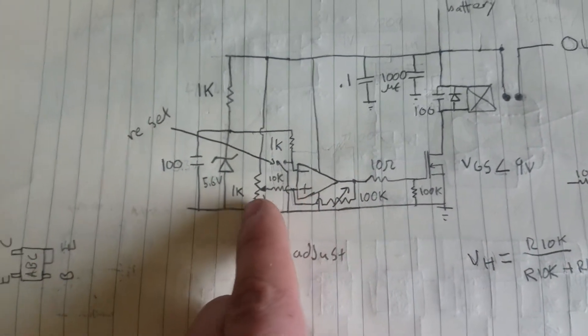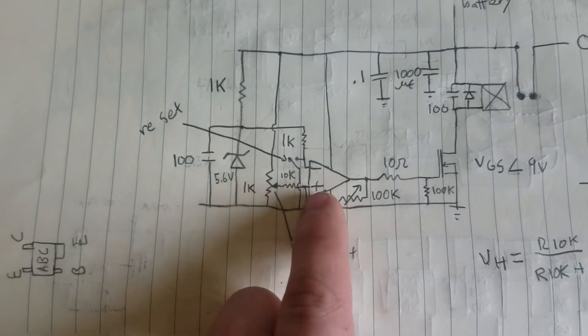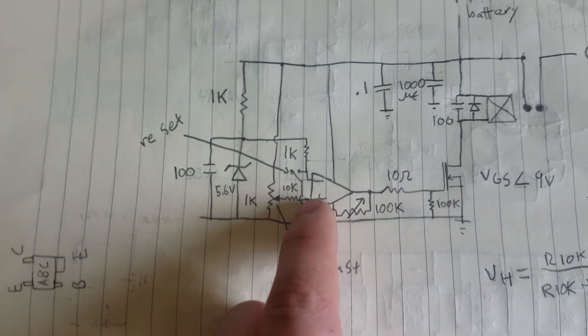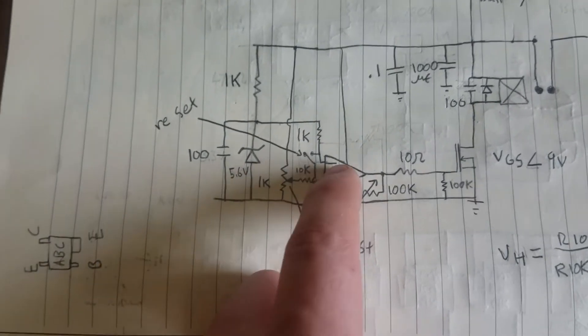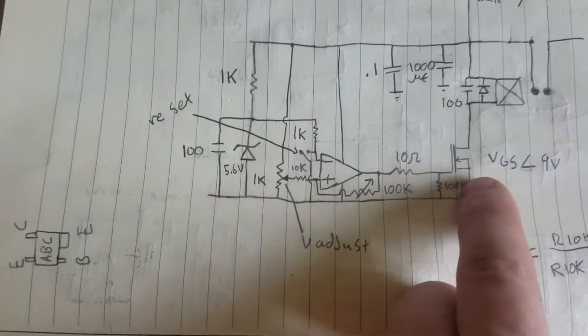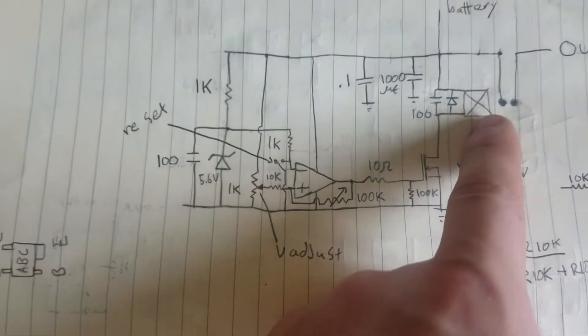And then it senses the supply voltage using this 1k pot right here. So whenever the voltage right here at the non-inverting terminal is less than the non-inverting terminal, the output will go low, which will turn this MOSFET off, which will open this relay.